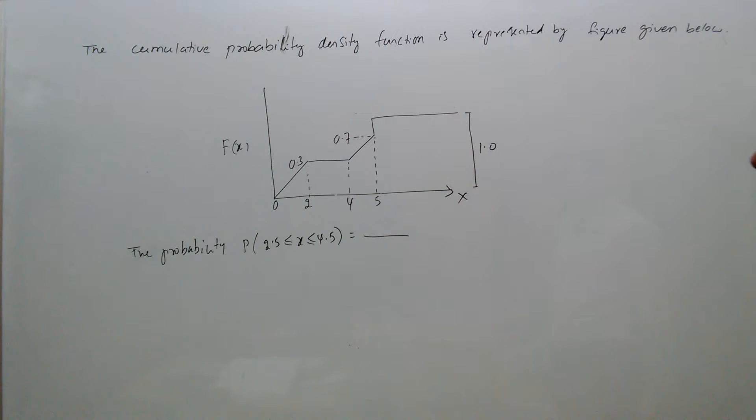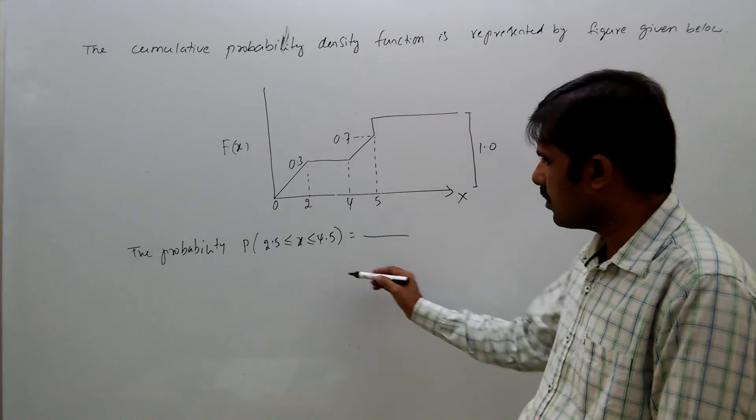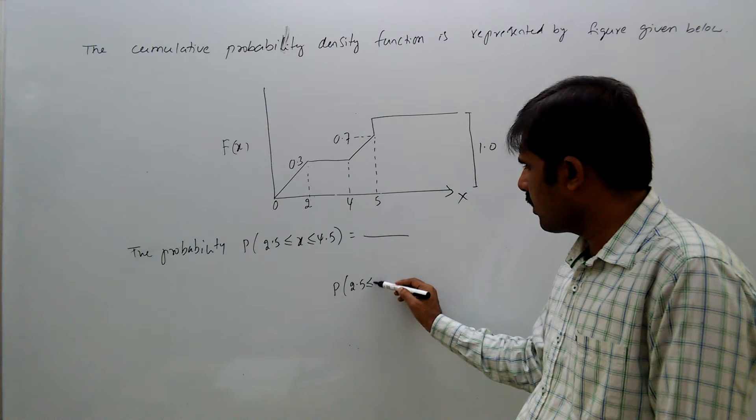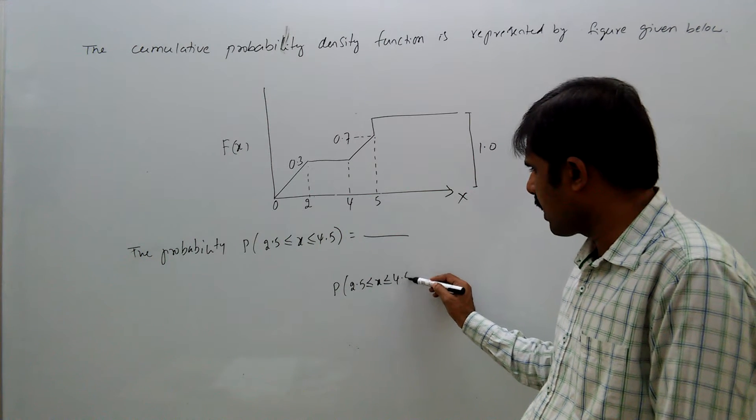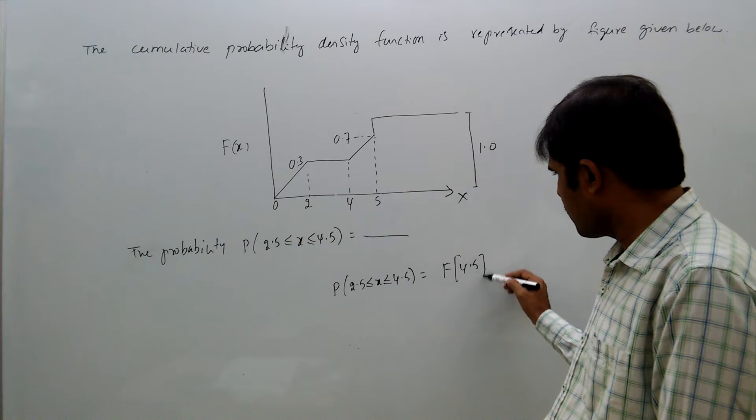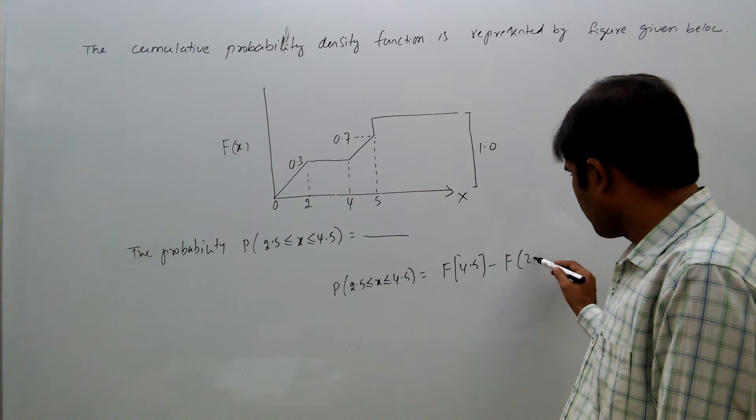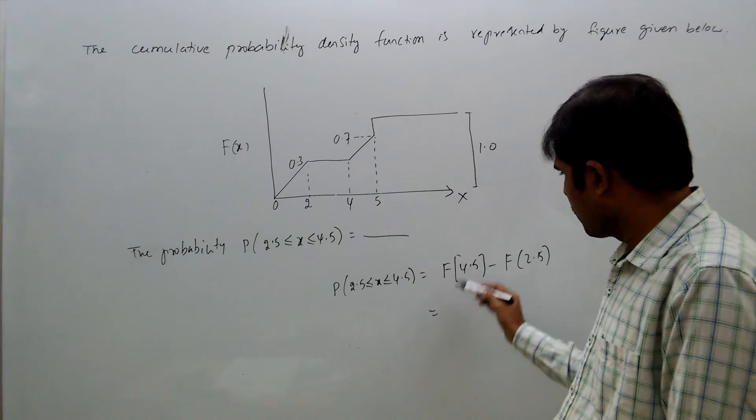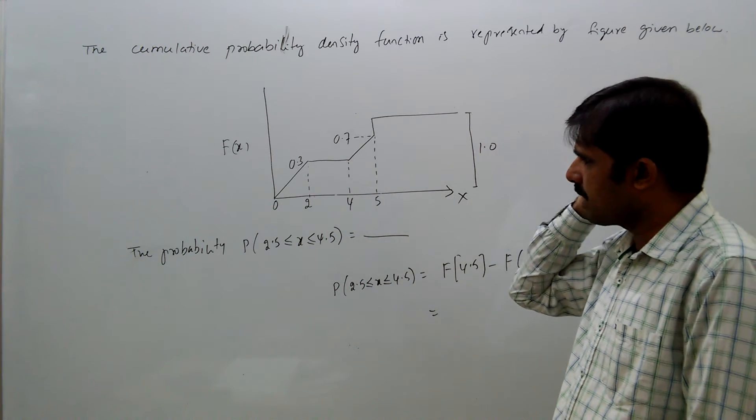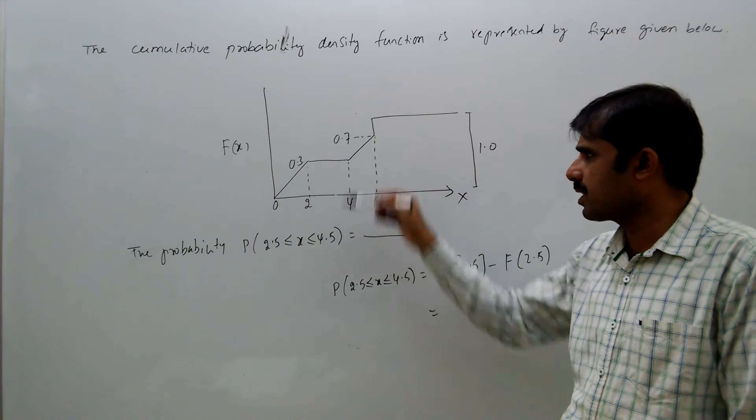Now here you see, P of 2.5 less than or equal to x less than or equal to 4.5 is nothing but f of 4.5 minus f of 2.5. See, f of 4 is 0.3, f of 5 is 0.7.